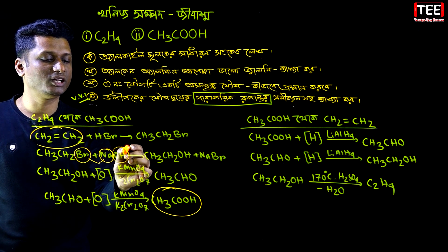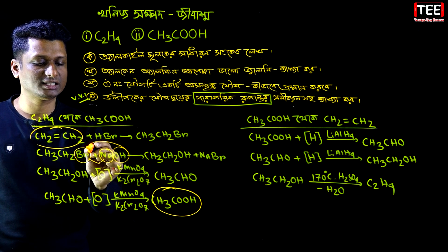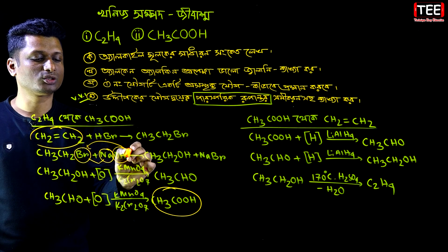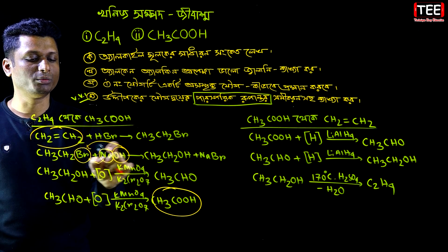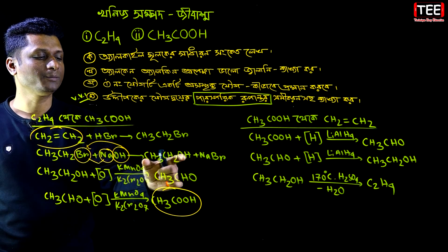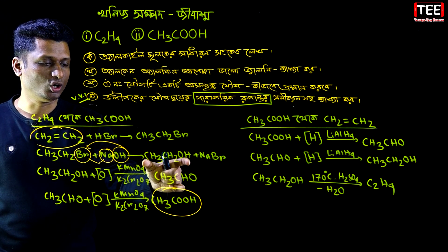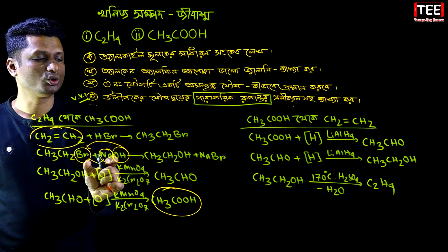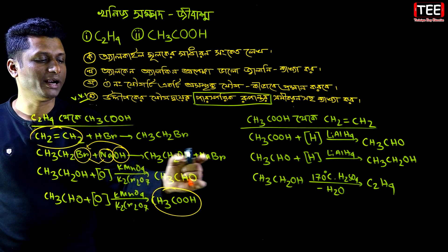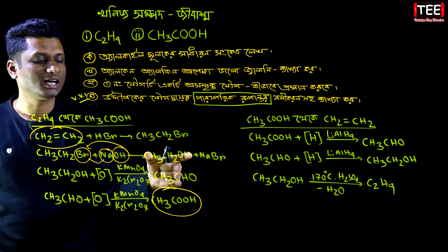Bromine is applied to ethylene (ethene). The reaction of bromine with ethene gives Sodium Bromide as a product. This is the ethylene reaction.